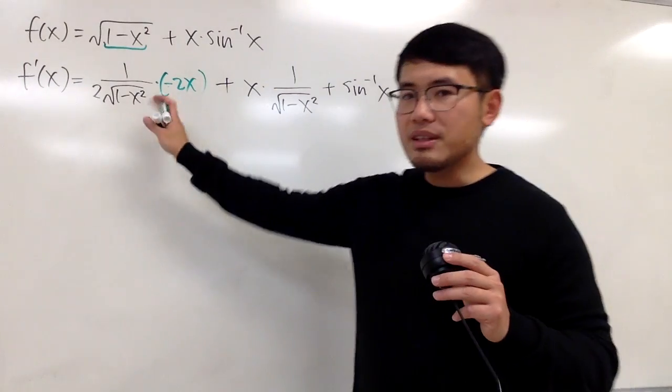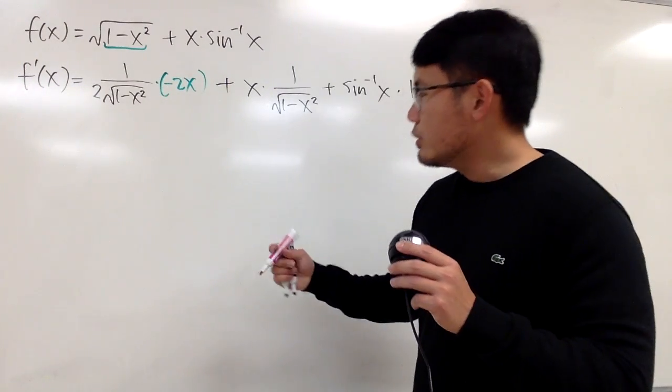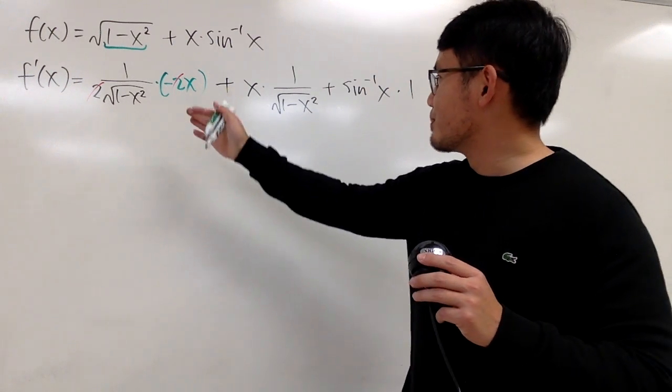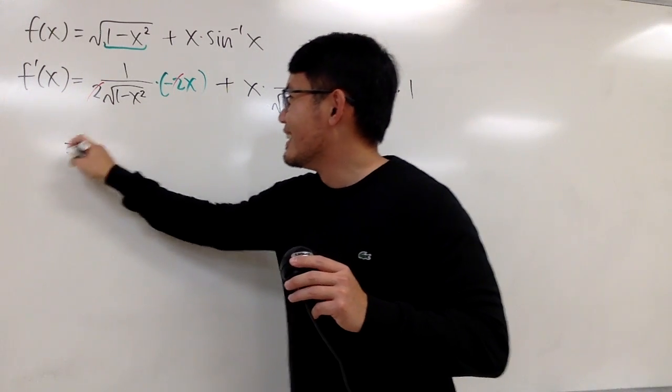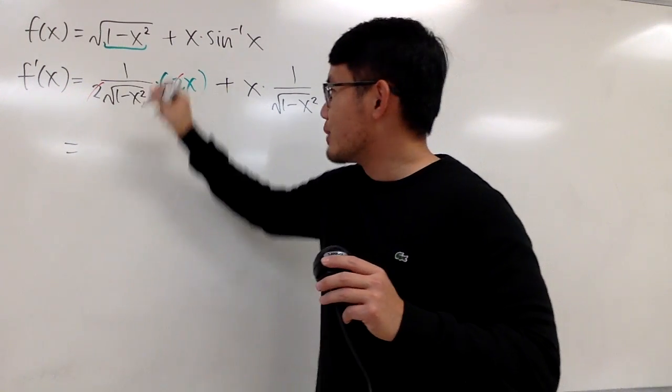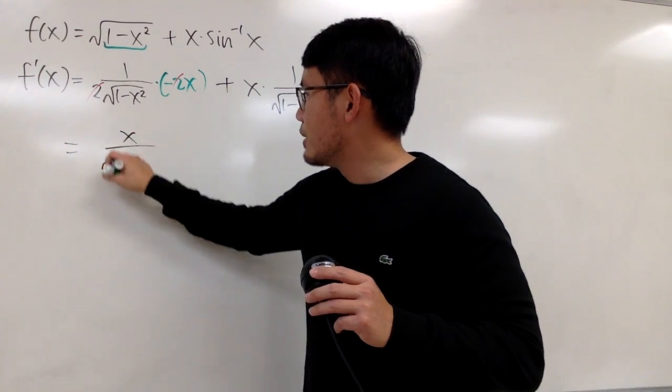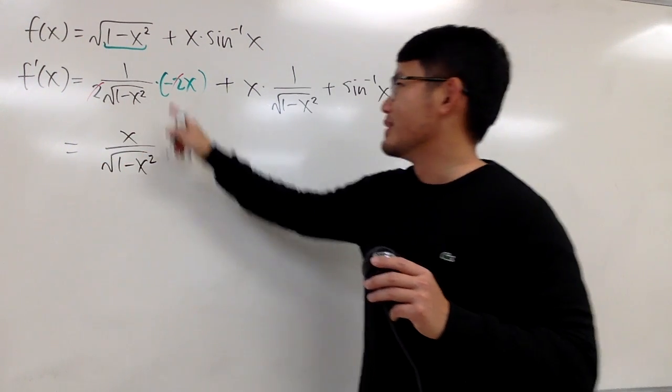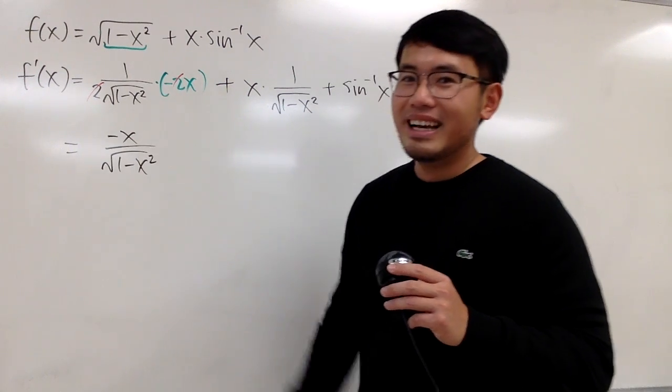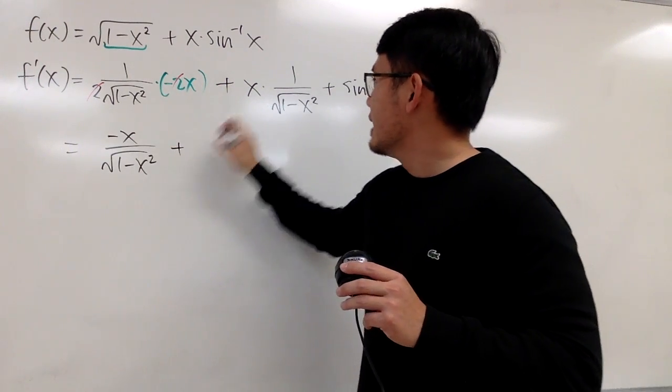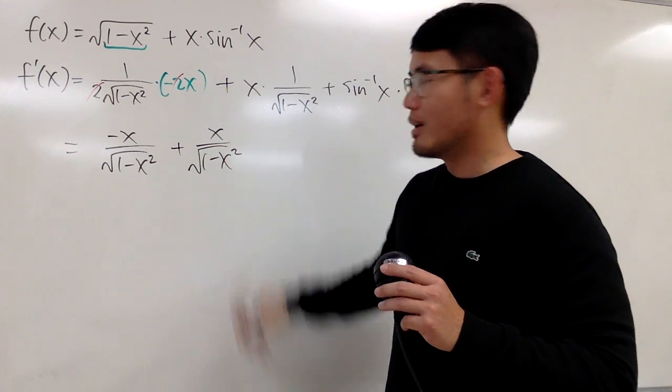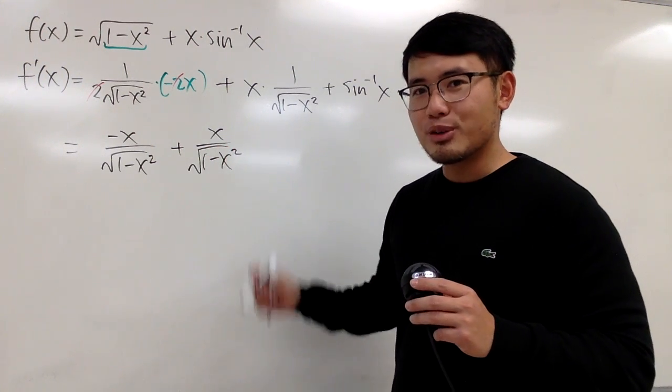And now, let's fix this a little bit. Notice, we have the 2 and 2 cancel, and let me actually just put this up again for you guys. On the top, this right here is x over square root of 1 minus x squared, and then right here, oh, sorry, I forgot the minus. And then, right here, we add x over square root of 1 minus x squared, and what happens? Yes, they are going to be zero.